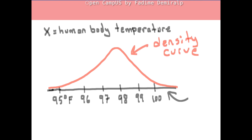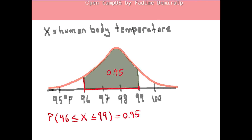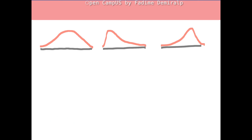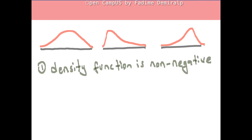Here is a density curve. The horizontal axis is the number line for outcomes of the random variable X. Suppose the area under the density curve over the interval of 96 to 99 is 0.95; then we understand that the probability that the human body temperature is between 96 and 99 is 0.95. All continuous probability distributions have the following properties: first, regardless of its shape, a density curve cannot be below the horizontal axis — in other words, the density function is non-negative. This should make sense since an outcome probability must be between 0 and 1. Second, the total area under the density curve is equal to 1.